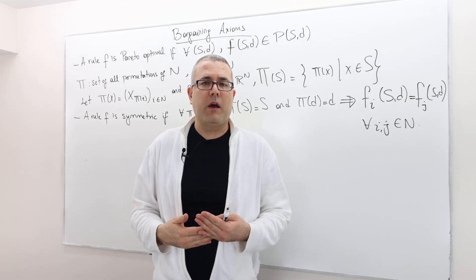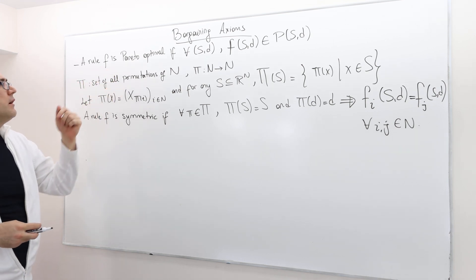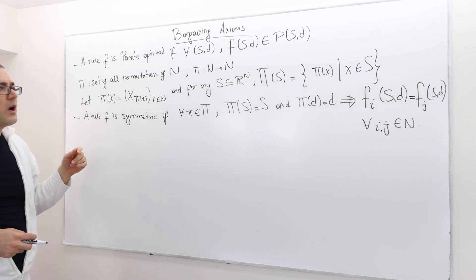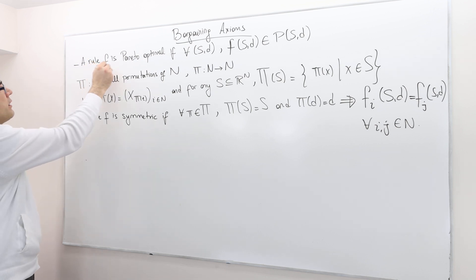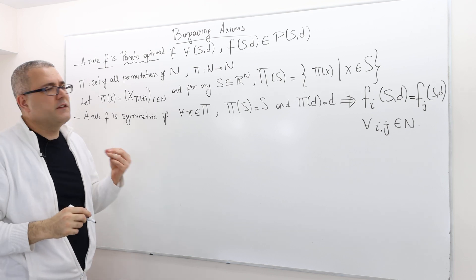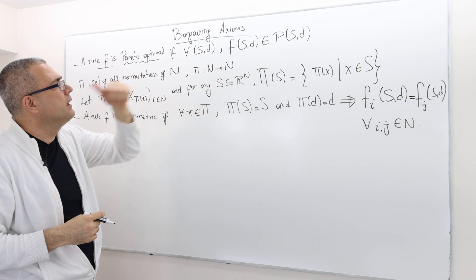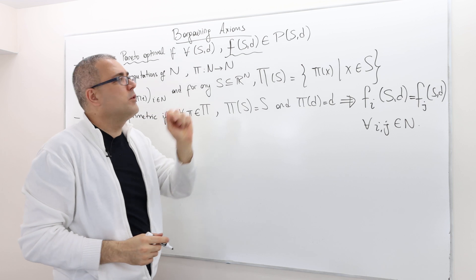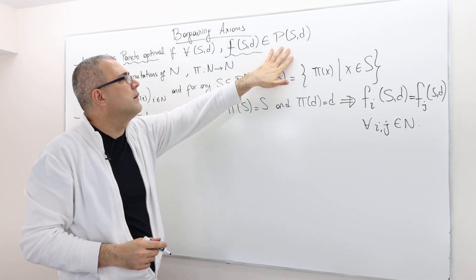In this episode, I'm going to talk about two axioms. The first axiom is Pareto-optimality — pretty straightforward. The other one is symmetry, which is a bit more complicated. A bargaining rule F is called Pareto-optimal if it satisfies the following: for any bargaining problem you are given, (S, D), the rule should be selecting a feasible payoff vector from the set of Pareto-optimal vectors.